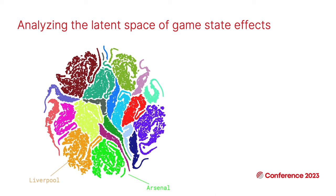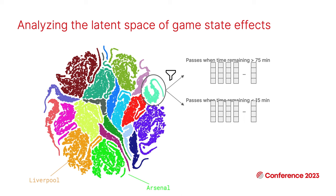We then apply filters to these latent vectors to understand how teams behave in different game states. For example, to compare the last 15 minutes versus the first 15 minutes, we take all passes from the last 15 minutes and compute the mean latent vector, do the same for the first 15 minutes, and take the difference — giving an indication of what differences arise when contrasting behavior across those game states.